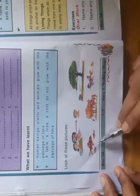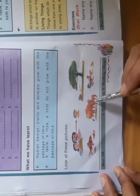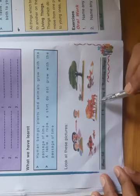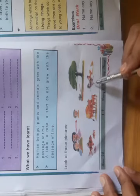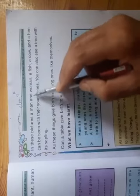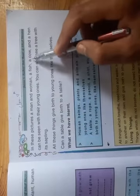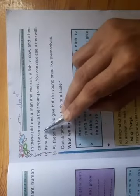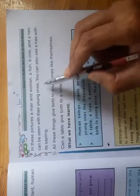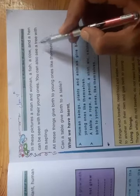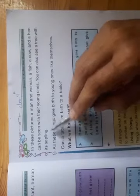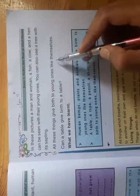In these pictures, a man and a woman, a fish, a cow, and a hen can be seen with their young ones. You can also see a tree with its sapling. All these things give birth to young ones like themselves.